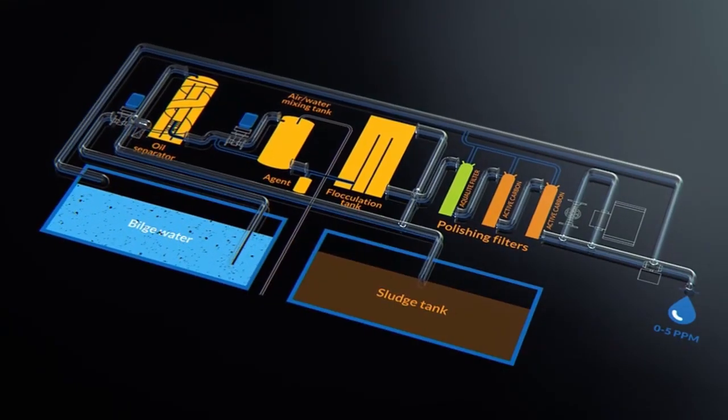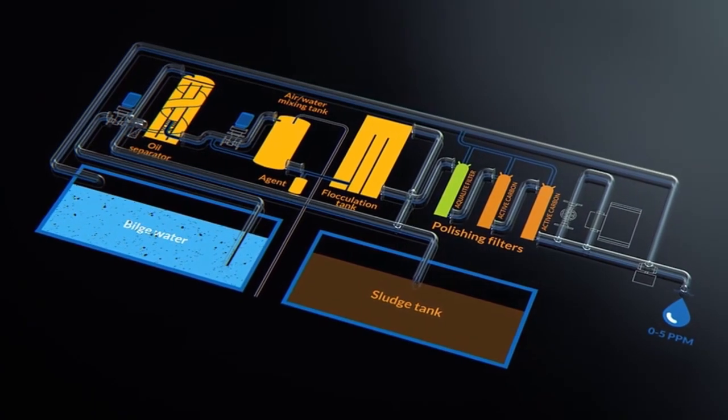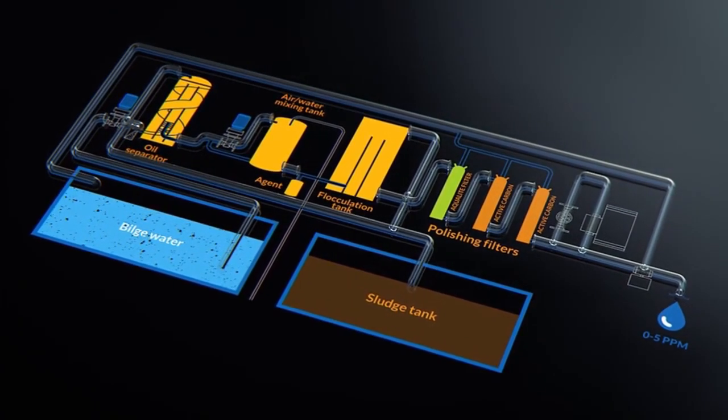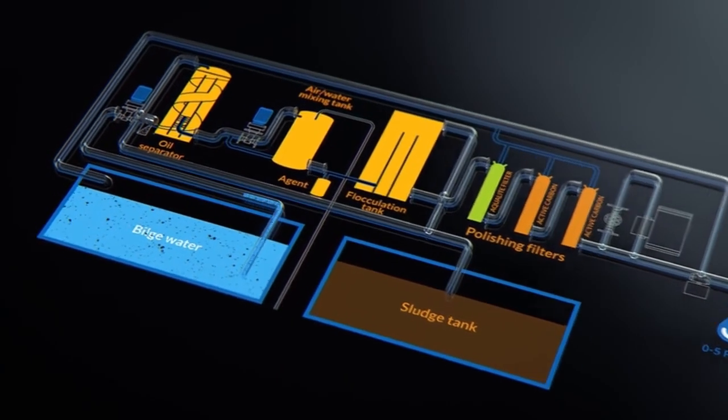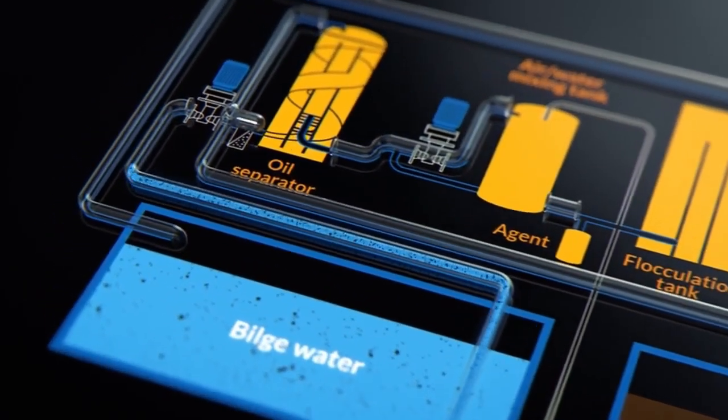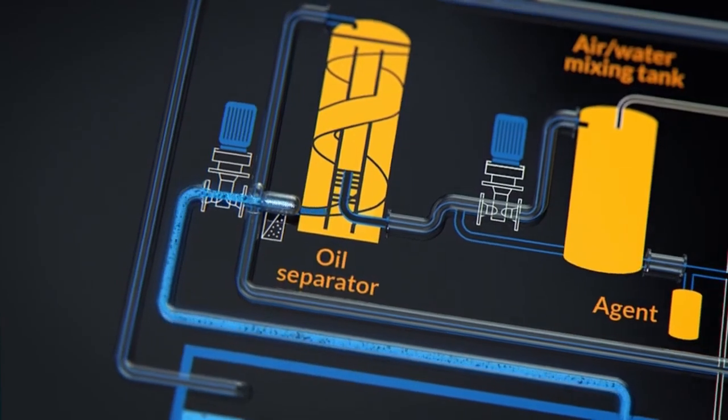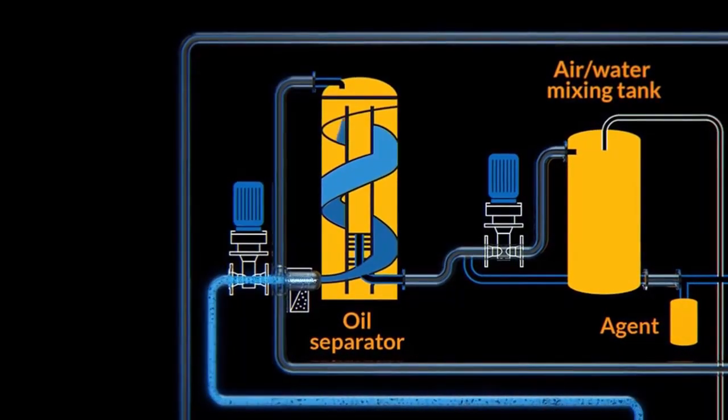Let's take a look at the different stages of separation in a flocculation type bilge separator. Bilge water from the bilge tank is fed to the first stage via a filter. In the oil separator, the bilge water circulates upwards around the periphery of the separator. The change of direction and drag helps to separate the oil from the water.